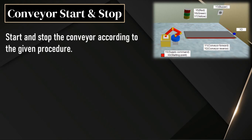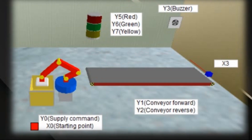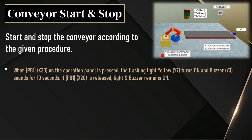In this video, we will discuss conveyor start and stop operation. When push button 1 is pressed, the yellow light turns on and buzzer activates for 10 seconds. If push button 1 is released, the light and buzzer remain on for the specified time duration of 10 seconds.